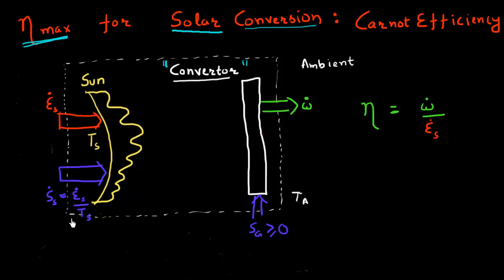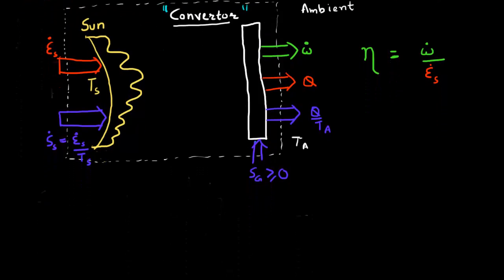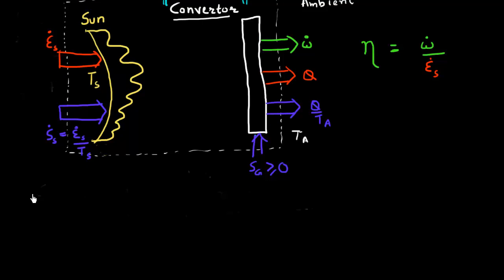I have incoming energy with its associated entropy flux, and I have entropy generation. So I must also have an outgoing flux of entropy, which mandates that I release some of this energy from the sun as heat, represented by the symbol Q. The corresponding entropy flux is Q divided by the temperature — in this case, the ambient temperature T_A at which this heat is released.